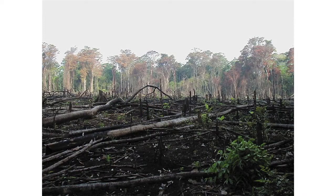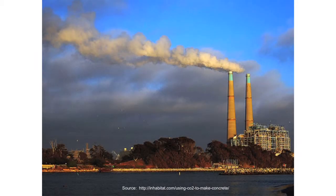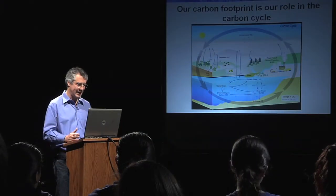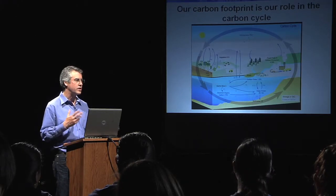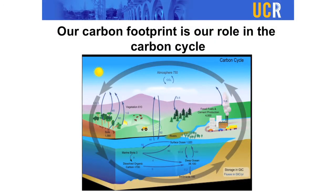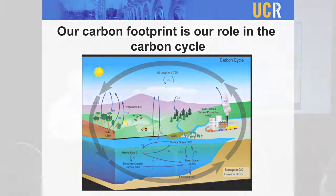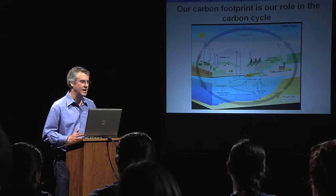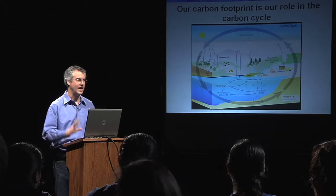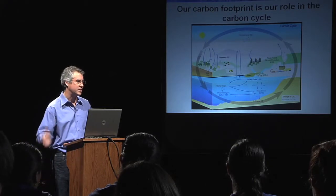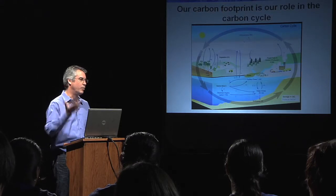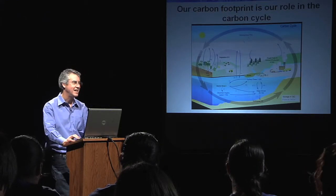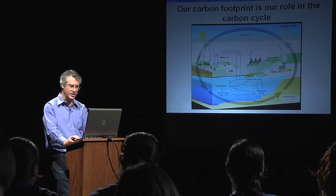We're taking carbon that was previously stored underground, burning it, and transporting it to the atmosphere and causing a change. When we ask what our carbon footprint is, we're really asking what is our role in this global carbon cycle — how are we shaping the way carbon moves around on our globe? Carbon is stored in vegetation, in the ocean, in the atmosphere, and in soils. The really big change is our burning of fossil fuels, moving a previously sequestered source into a mobile source in the atmosphere.